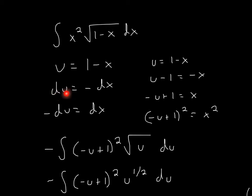Now we take the derivative of both sides. The derivative gives us du, and the derivative of negative x will be negative dx. The actual problem has a positive dx, so we multiply both sides by negative 1. Therefore, we get negative du is equal to dx.